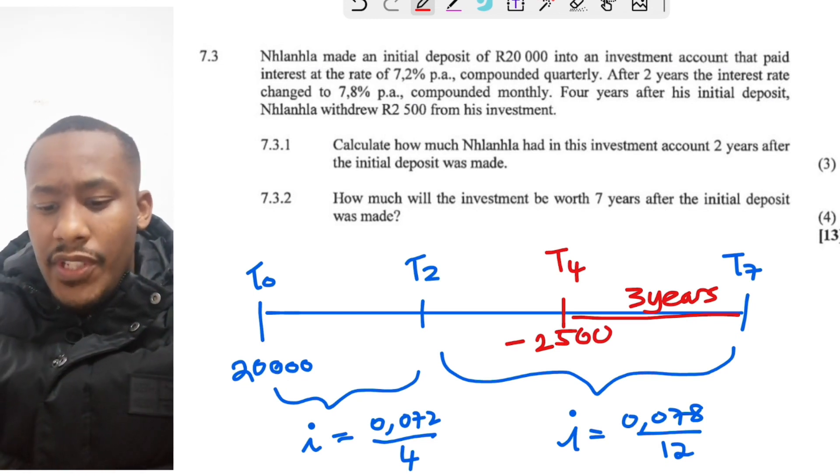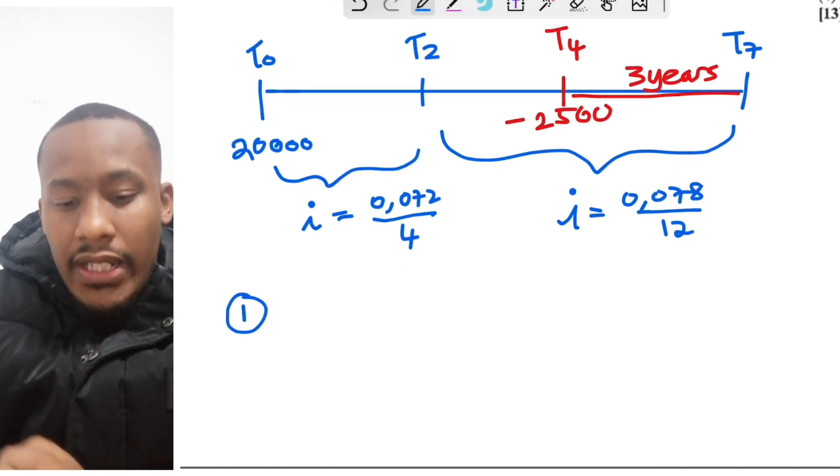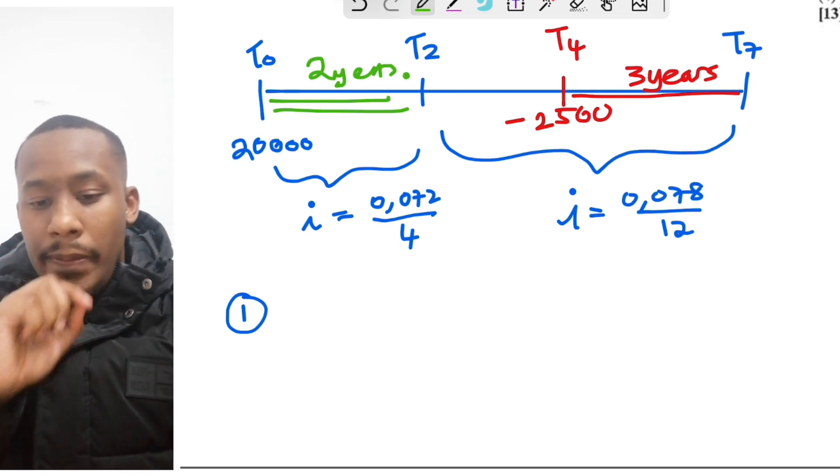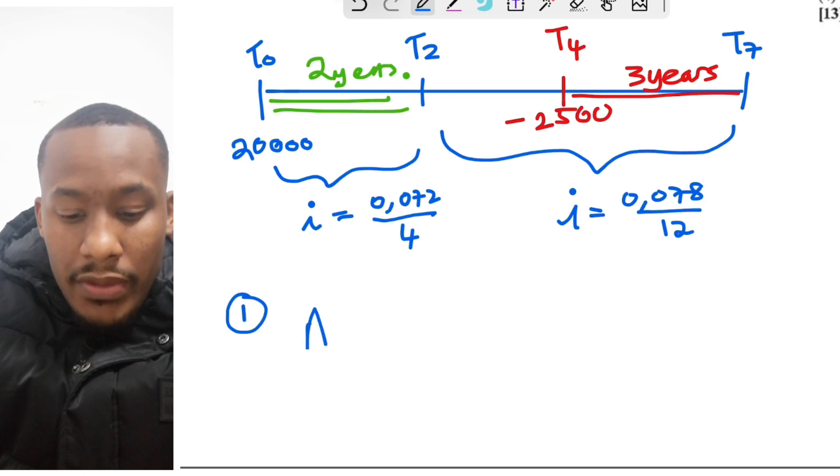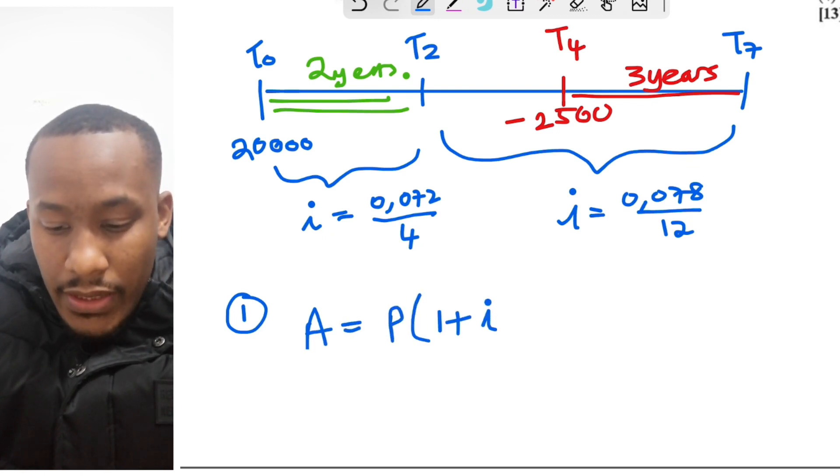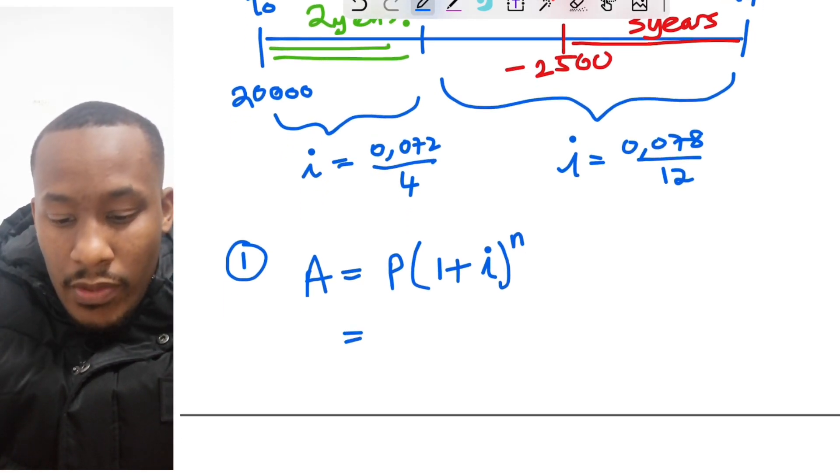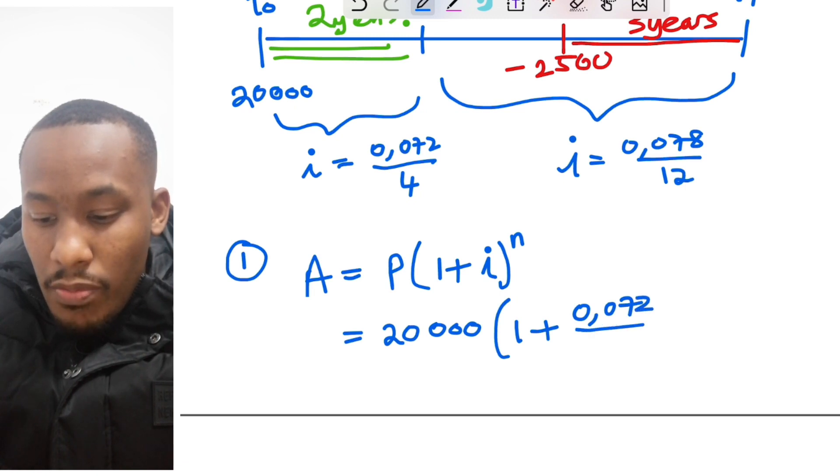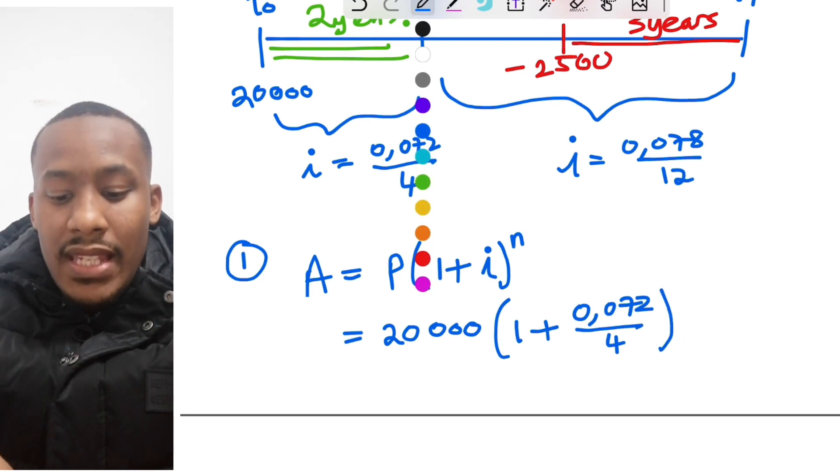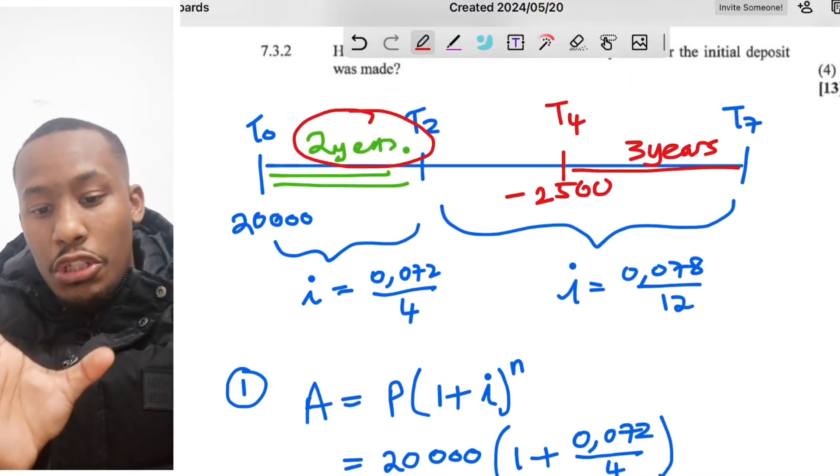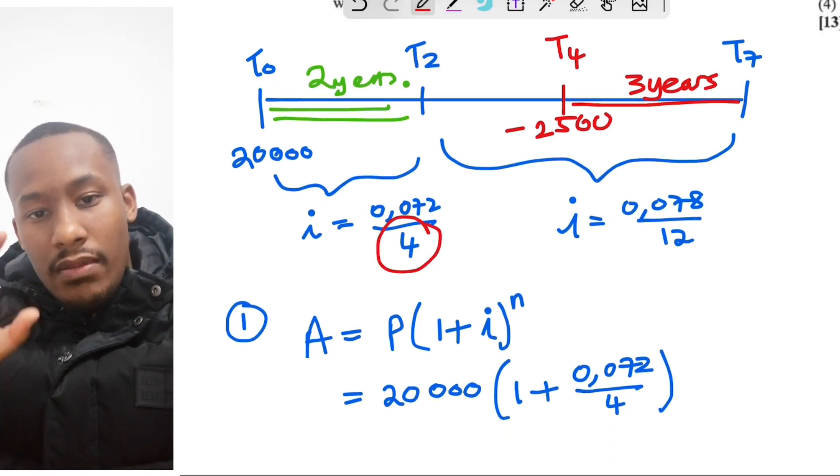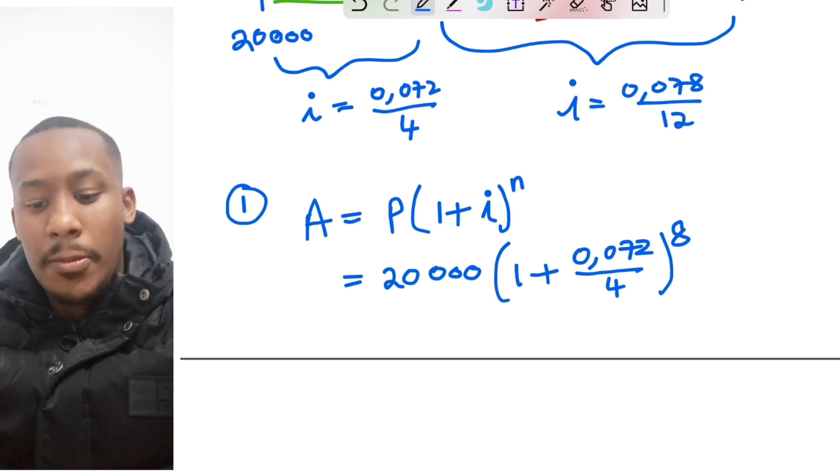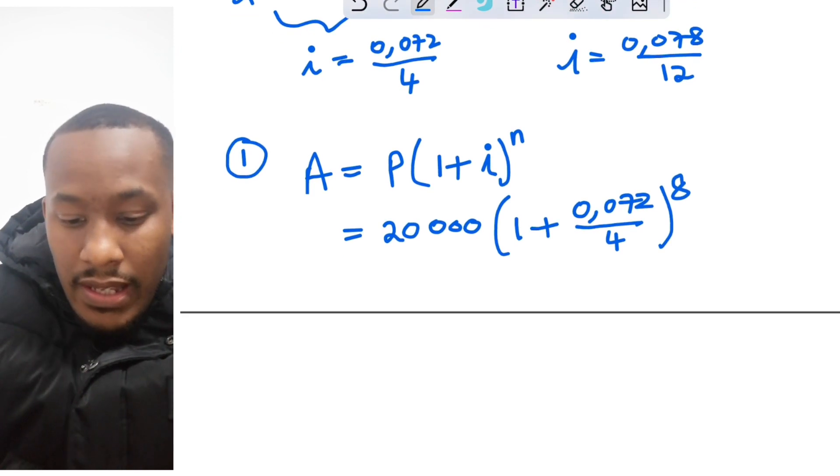Now let's calculate the first part of the question. We first need to find out how much he generated for this initial two years. To work that out, we'll use the compound interest formula: A equals P times 1 plus i to the power of n. Investment is 20,000. The interest rate we wrote it down over here, 0.072 divided by 4 to the power of, now remember the number of years is two years for that initial period. And because it's compounding four times per year, that means it compounds a total of eight times. So I'll write here 2 times 4, which is 8.